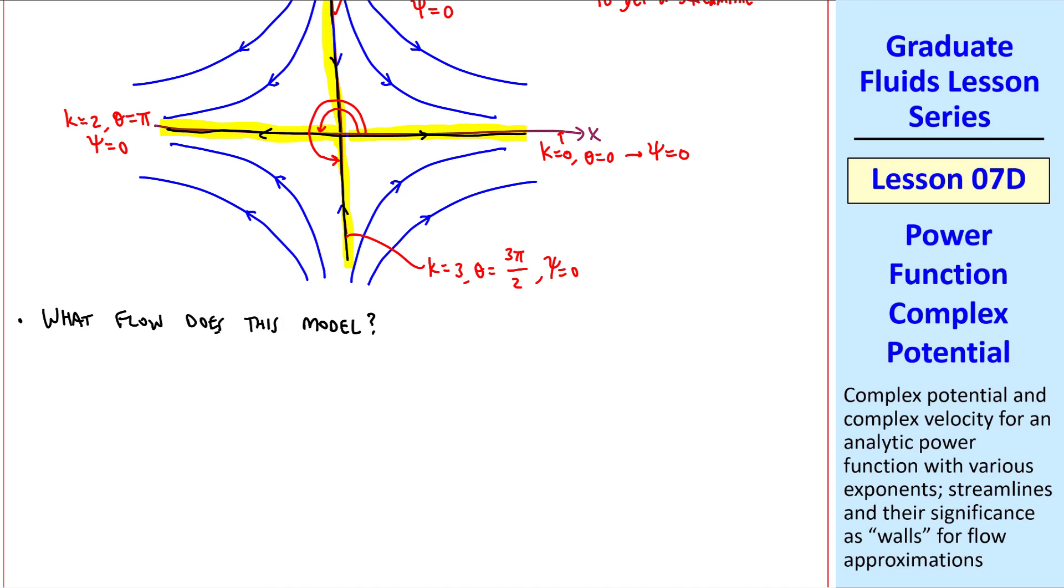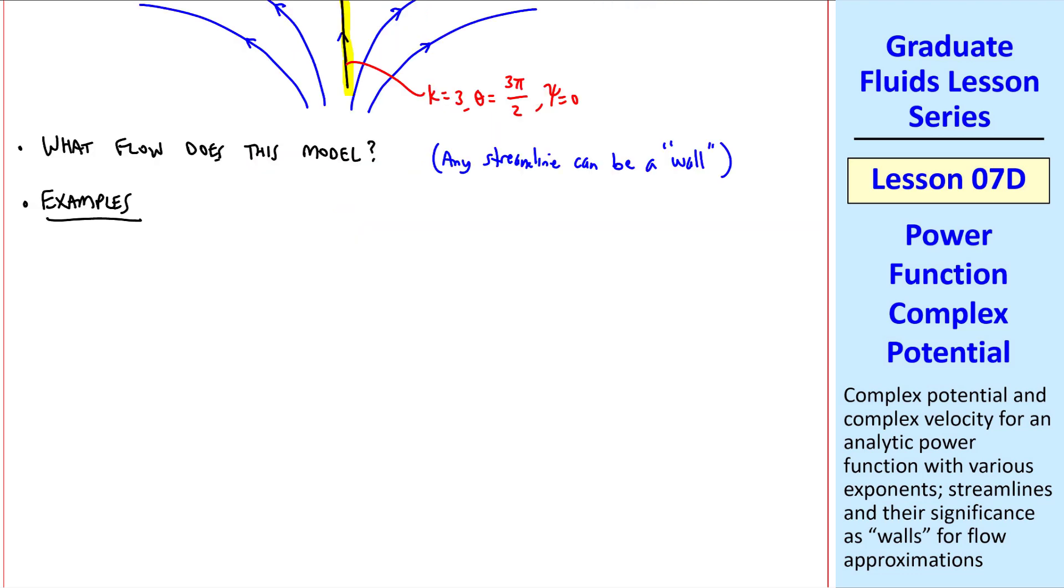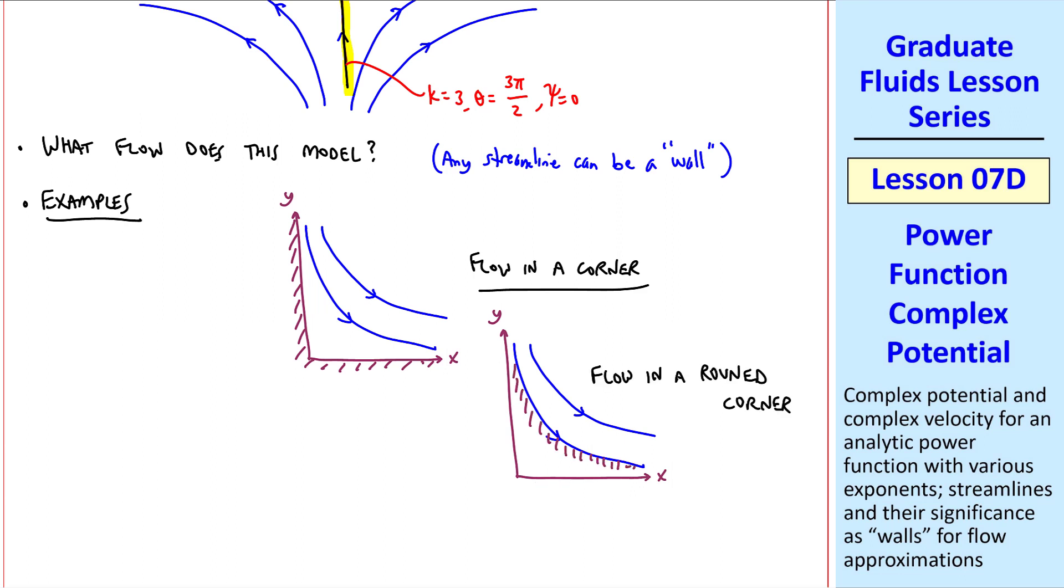What flow does this model? Again, we use our statement that any streamline can be thought of as a wall. So depending on which streamline or streamlines we pick, we can model different kinds of flow. Here are some examples. If we pick the x and y-axes as walls, we model flow in a corner. If instead, we pick one of our curved streamlines, such as this one, and think of it as a wall, we have flow in a rounded corner. Note the limitation that the wall must be the shape of the streamline for this model to represent something physical.